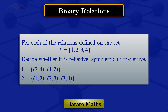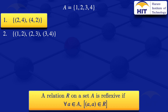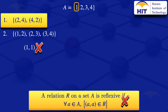Looking at the first relation, I'll start by checking if it is reflexive. By definition, a relation R on a set A is reflexive if for all a in set A, the ordered pair (a,a) is in the relation R. Checking the first element, (1,1) is not in this relation, so it has violated the condition for reflexivity. There's no need to check the other elements 2, 3, 4 — the relation is not reflexive.